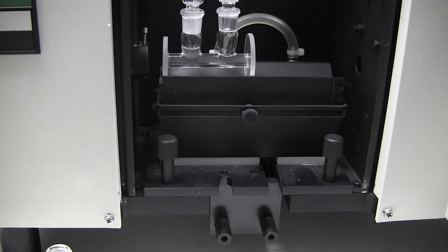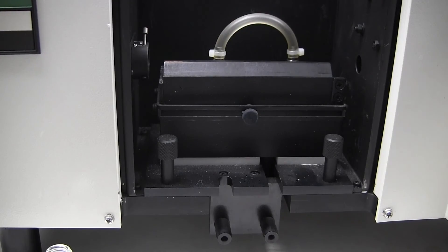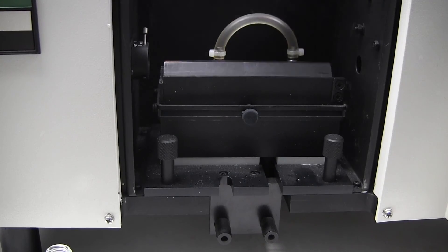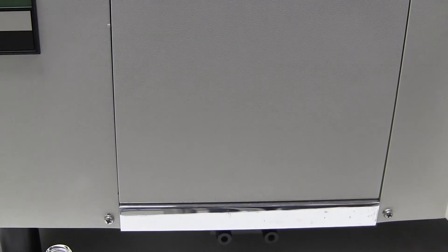Wait until the instrument returns to a constant of zero and then analyze your solution two more times. You will need these three numbers to determine the specific rotation of your compound.